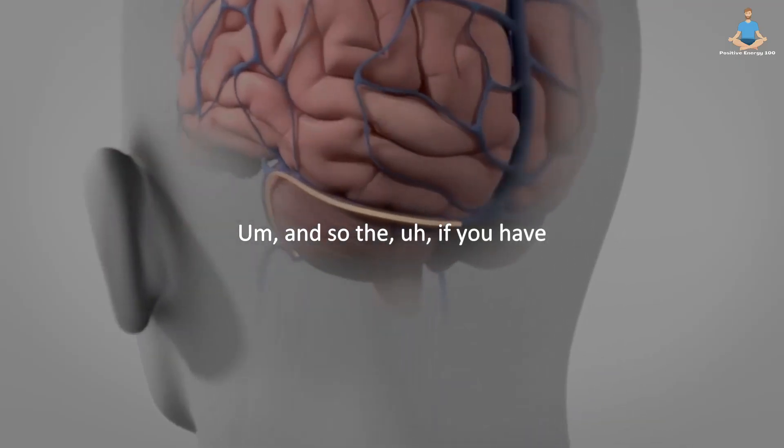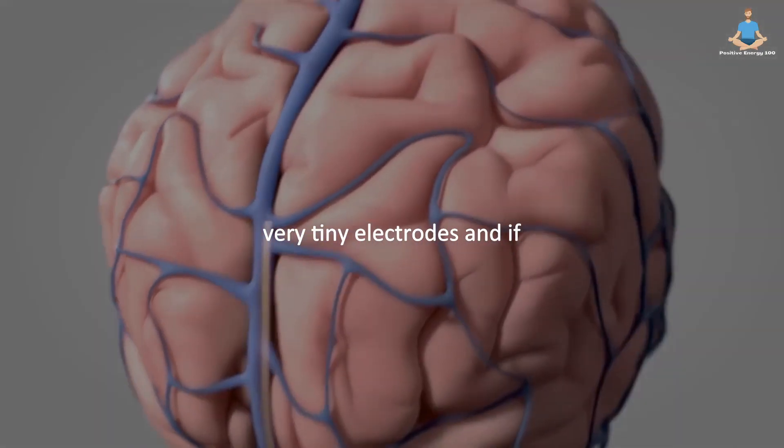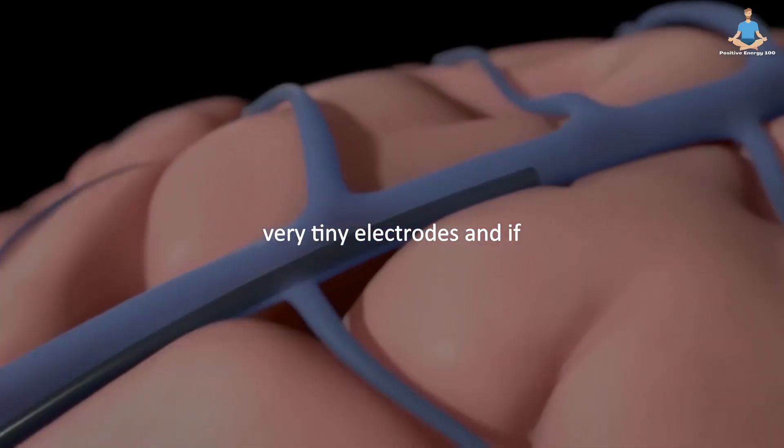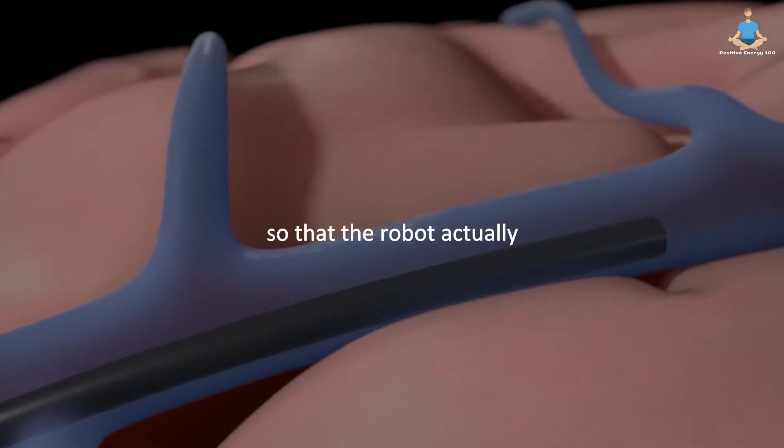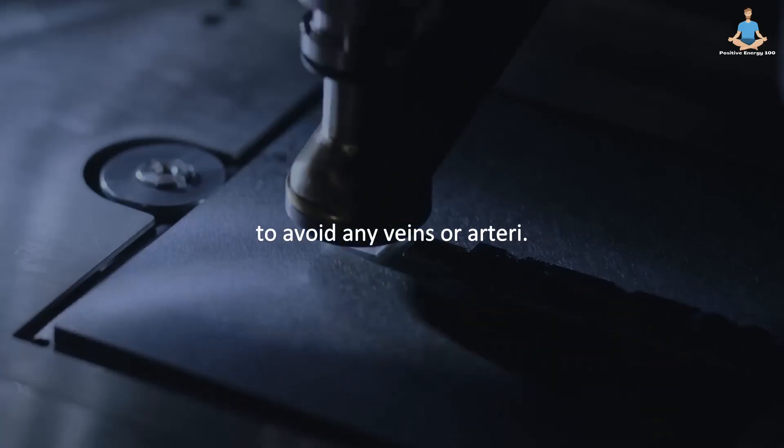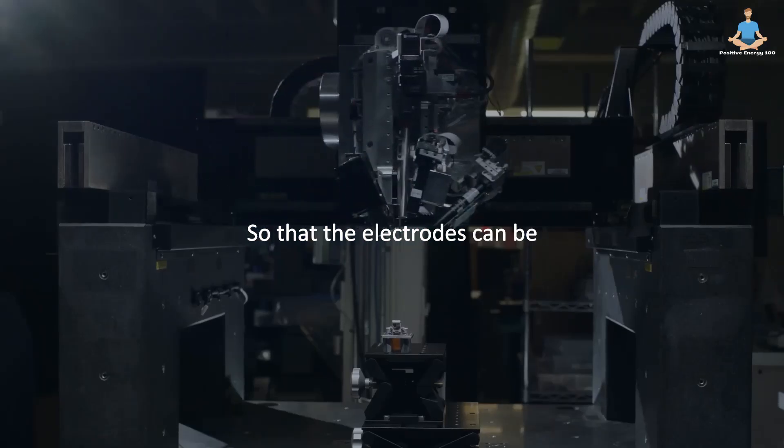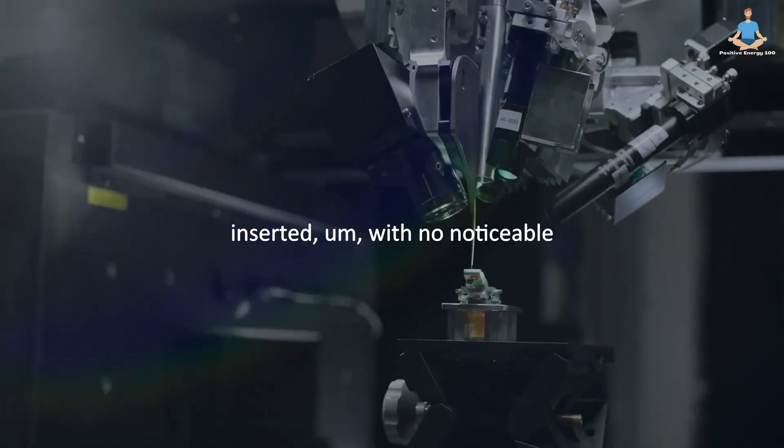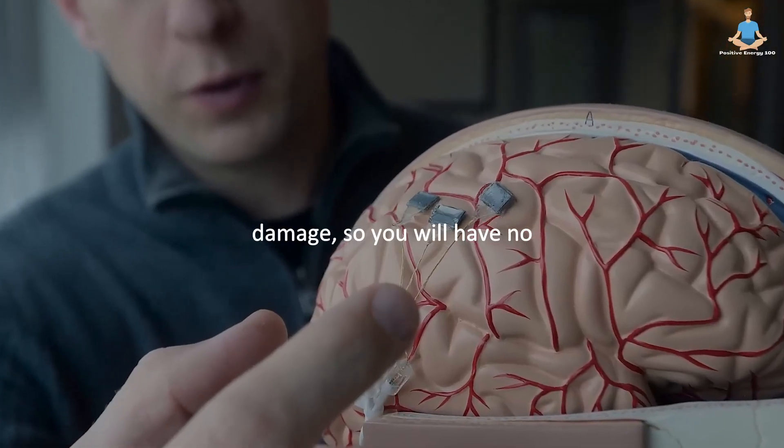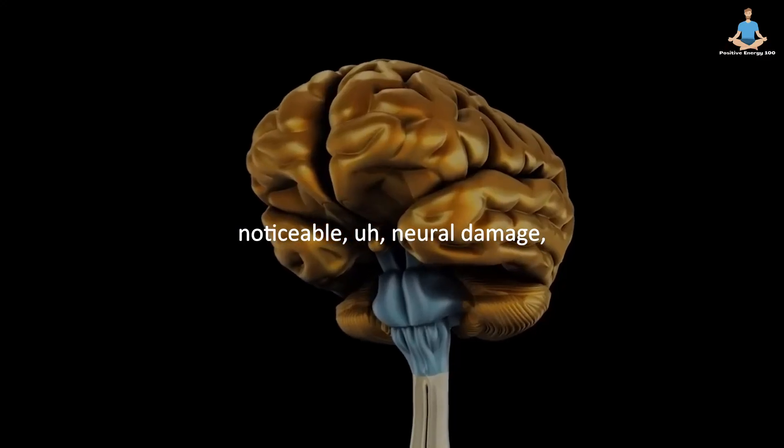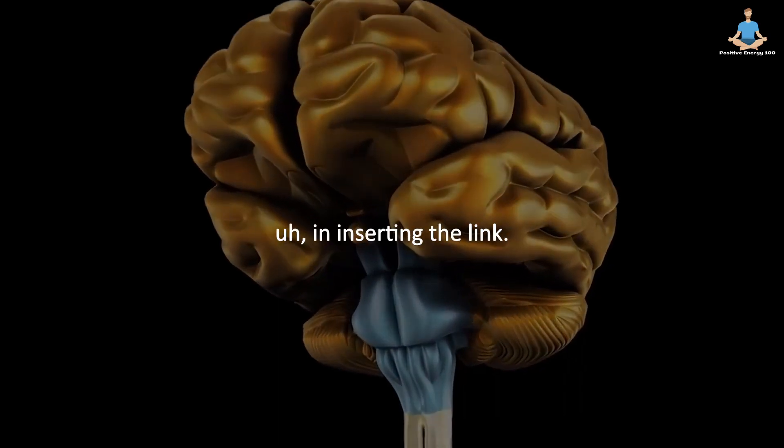And so if you have very tiny electrodes and if they're inserted very carefully so that the robot actually images the brain and makes sure to avoid any veins or arteries, the electrodes can be inserted with no noticeable damage. So you will have no noticeable neural damage in inserting the link.